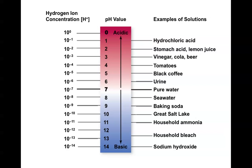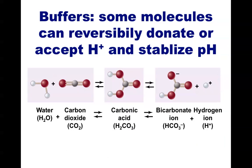Fortunately, our body has compounds known as buffers that help stabilize the pH of a solution. Buffers are molecules that can act as a weak acid or base, and they can reversibly donate or accept a hydrogen ion.